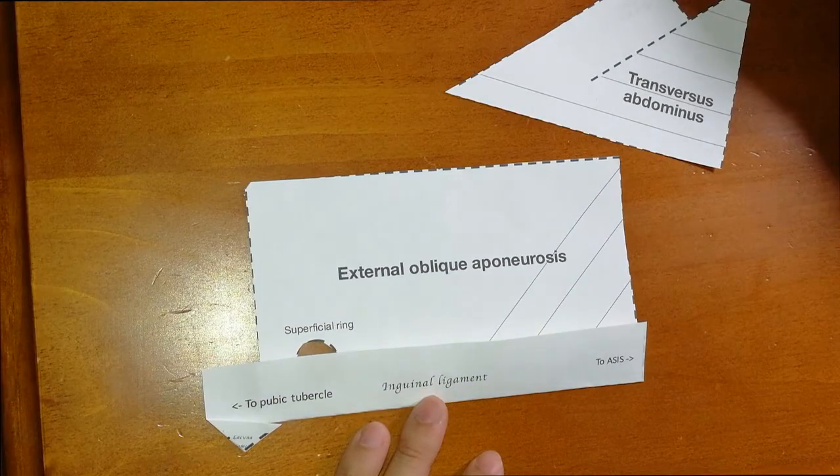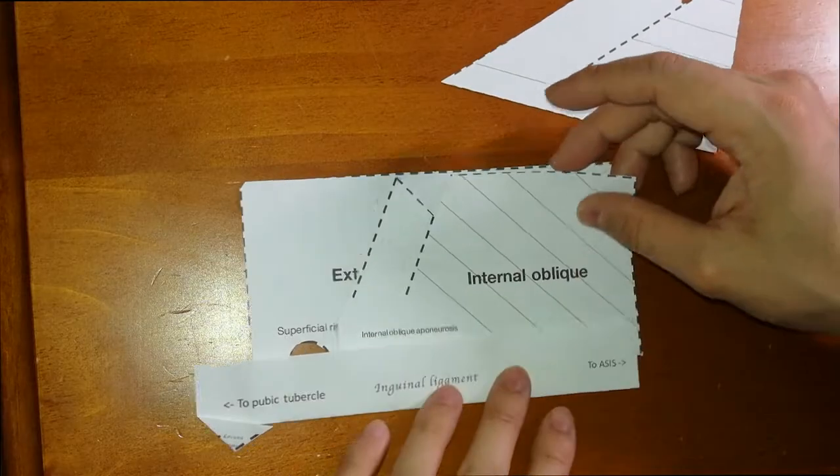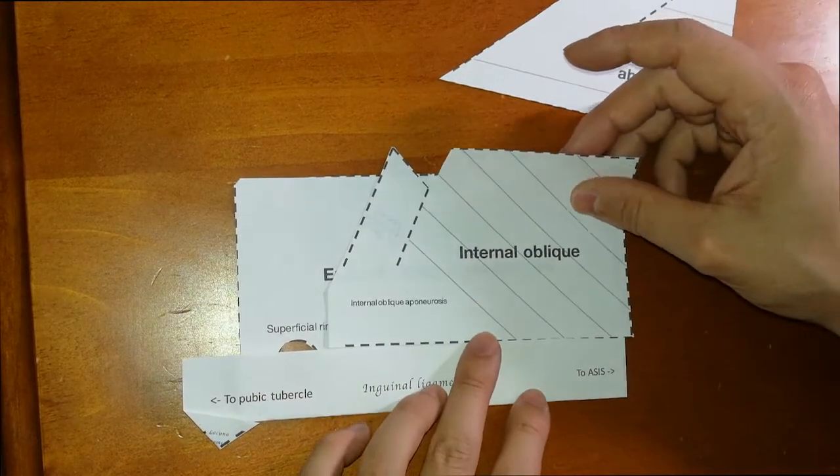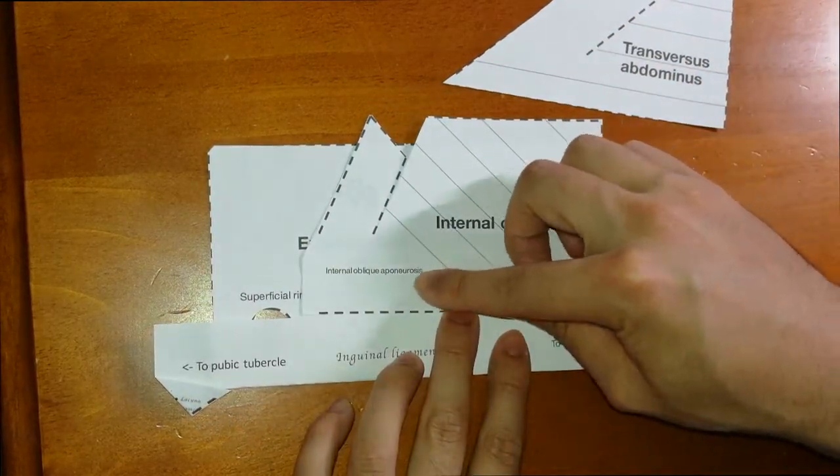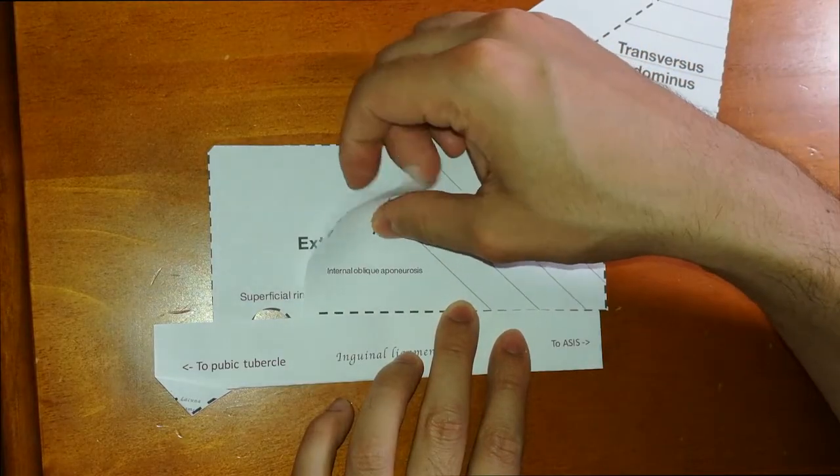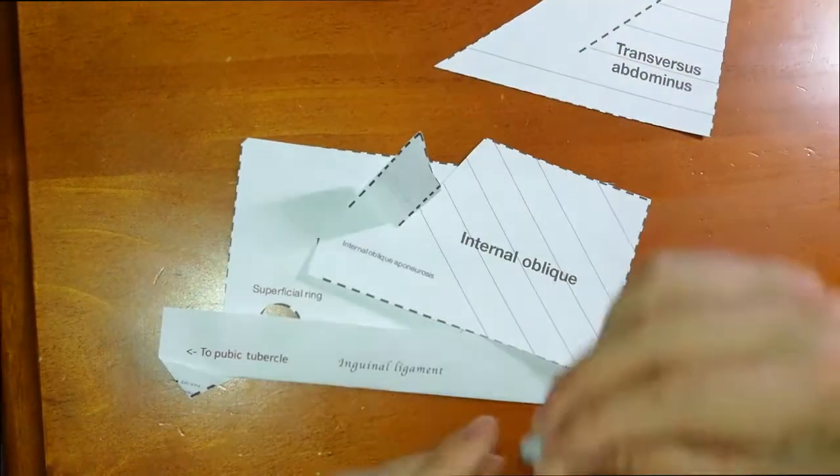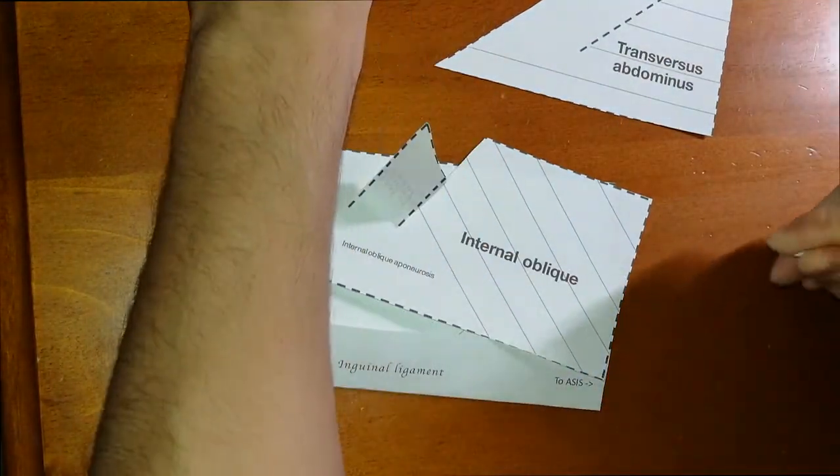After the external oblique, there is internal oblique. What happens with the internal oblique here is the fibers towards the medial side reflect down and attach to the inguinal ligament like that. I'm just going to get a piece of blu-tack and attach it to the inguinal ligament.